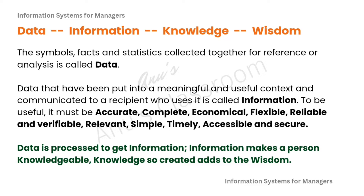But are they exactly the same? The symbols, facts, statistics — all those things which are collected together for reference or for analysis is what we call data. The raw facts and figures, numbers, letters, special characters, charts — those things are data. Data that have been put into a meaningful and useful context and communicated to the intended user will be called information. To be useful, information should be accurate, complete, economical, flexible, reliable and verifiable. It should be relevant, simple, timely, accessible as well as secure.